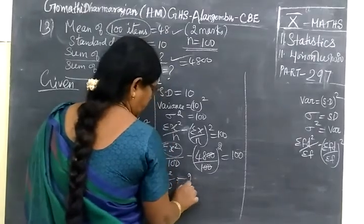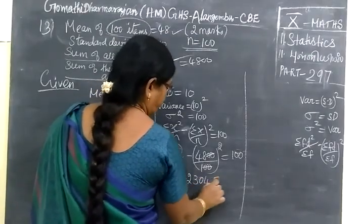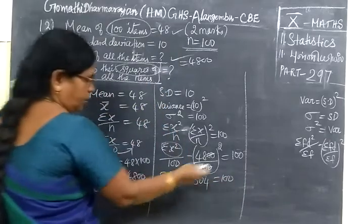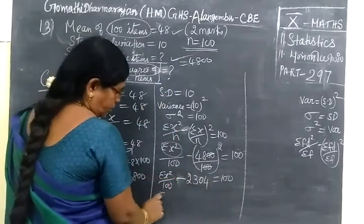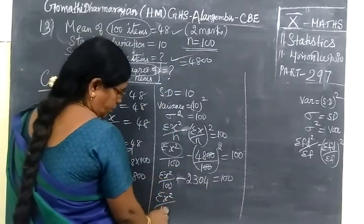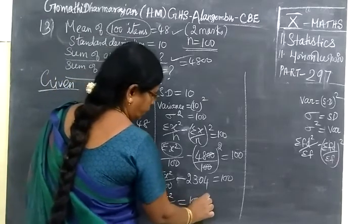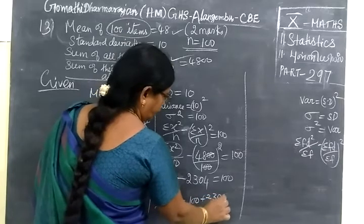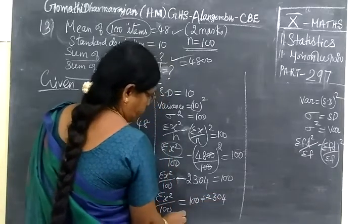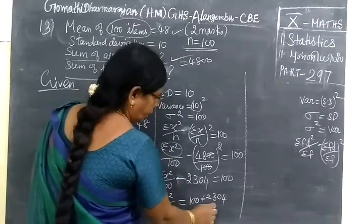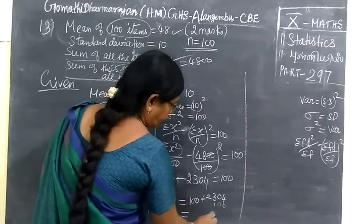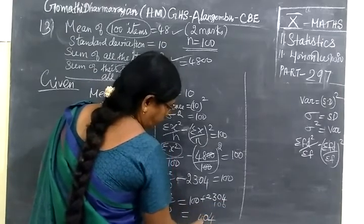2304 equal to 100. Minus on the other side, so sigma X square by 100 equal to 100 plus 2304. If you add it, 100 plus 2404.